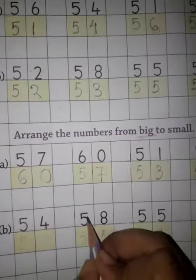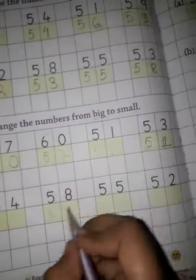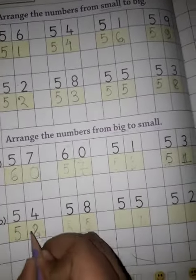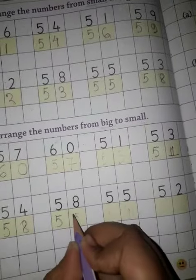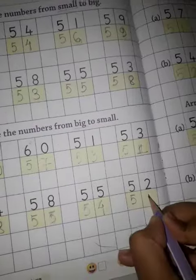Then 54, 58, 55, 52. So big number is 58, so we have to write 58, then 55, then 54 and 52.